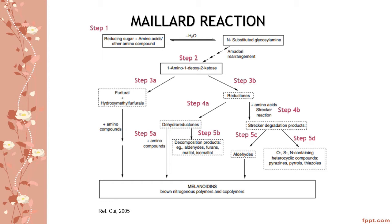This glycosylamine undergoes Amadori rearrangement to give — this is step two — one amino, one deoxy, two ketose. After step two, the next step can be either step 3a or step 3b. In step 3a, it will give furfural or hydroxymethylfurfural (HMF), as observed in caramelization. These correspond to the brown color. This HMF will react with amino compounds to give melanoidin, which is a brown nitrogenous polymer and co-polymer.